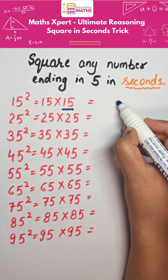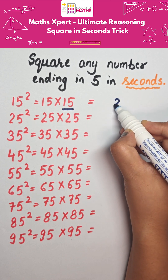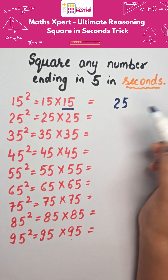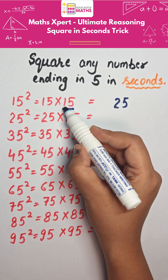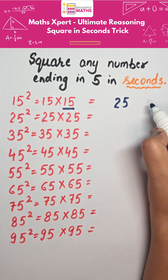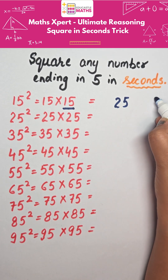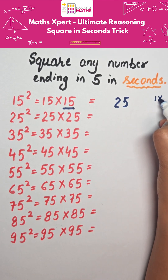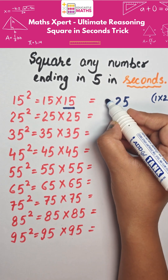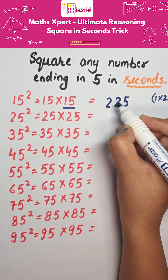So firstly we will do 5 times 5 makes 25. The number next to 1 is 2, so we will do 1 multiplied by 2, which is 2. So the answer will be 225.